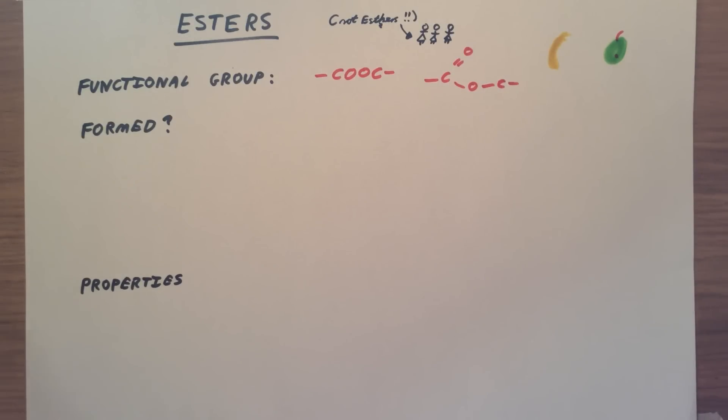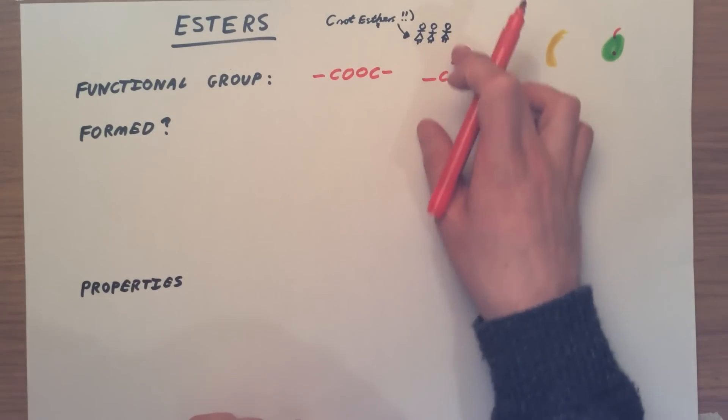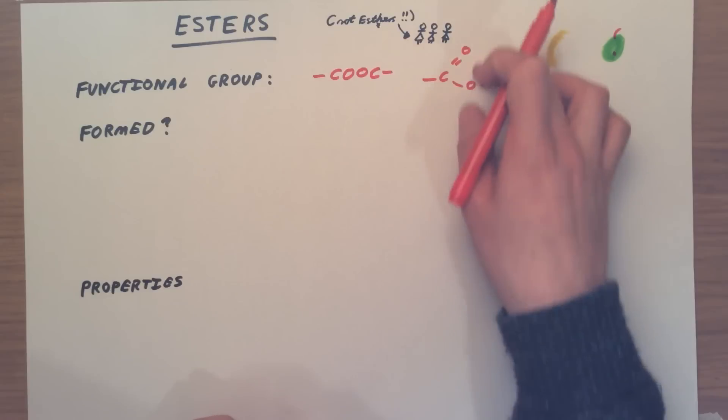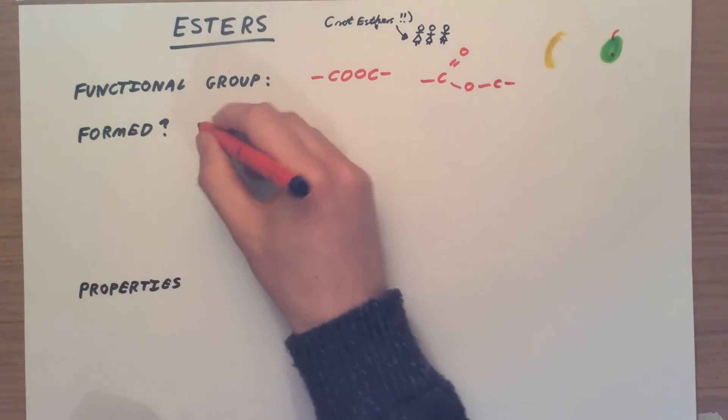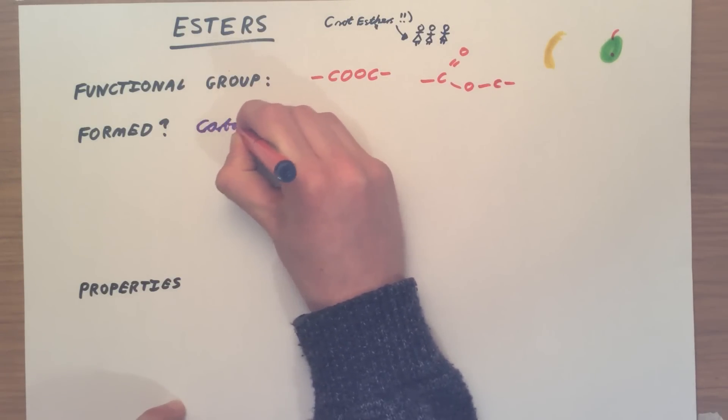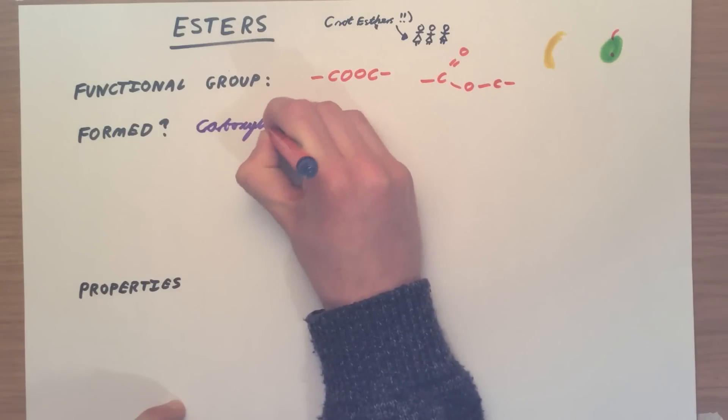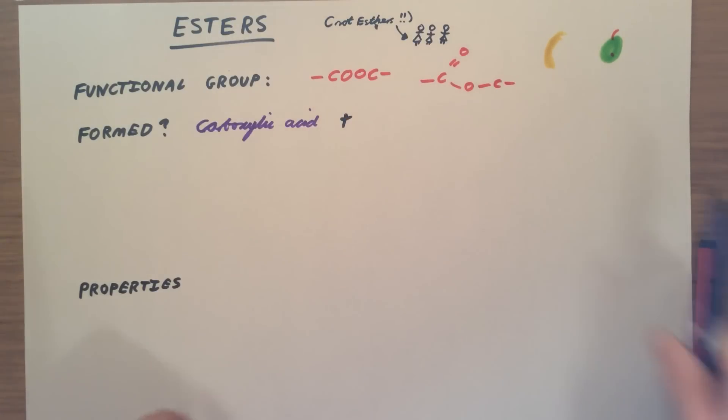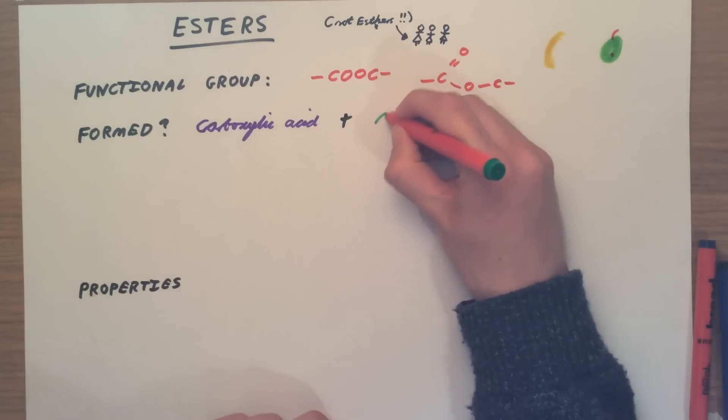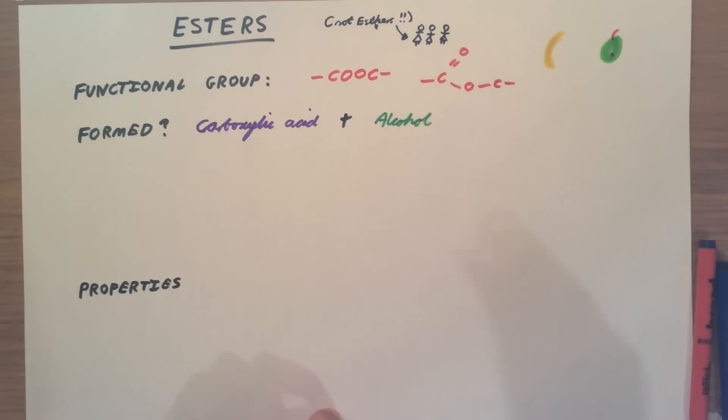So how are these esters formed? As you might have already spotted, we're going to start off with a carboxylic acid and an alcohol that are going to be combining, reacting together to form our ester. I'm going to keep my carboxylic acid as purple and my alcohol as green to make it clear about how we are forming and then naming esters.